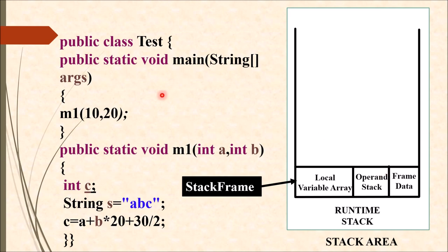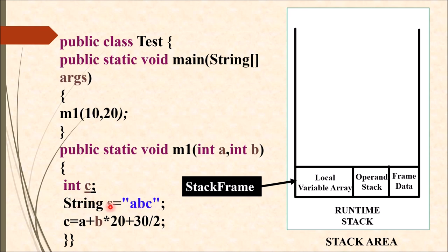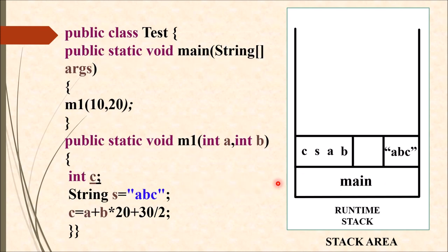Consider a program where main method is calling m1 method. Inside m1 there are four local variables — a, b, c, and s — and all these local variables will be saved inside the local variable array. The c variable performs a calculation like a plus b, or 20 plus 30 divided by 2 — all such calculations are performed inside the operand stack. Whatever constants or literals — like the string abc held in variable s — will come into the frame data slot.